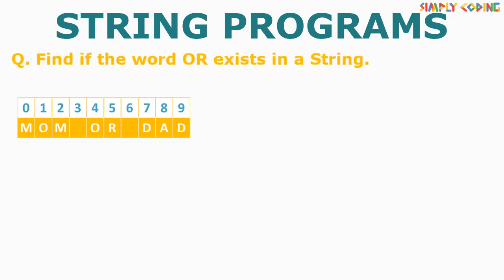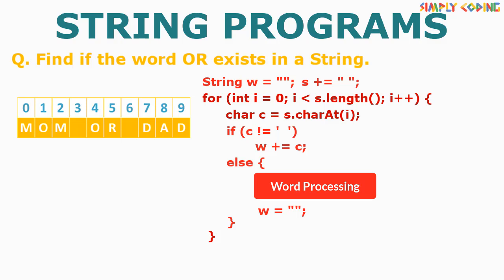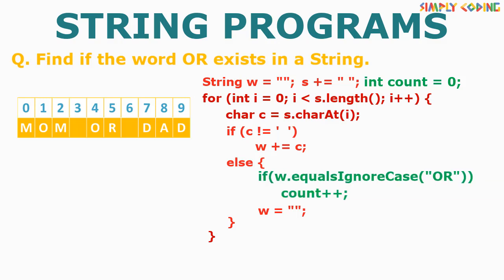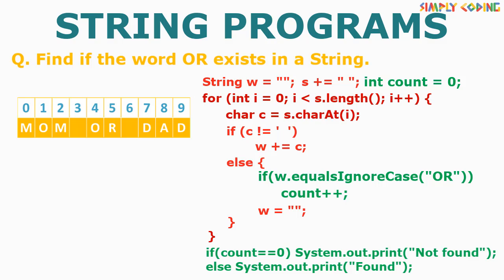The program could also be to find if a matching word exists — let's say we find the word 'or'. Or you could be asked to take the search word from the user as well. We will again take our template. We will first initialize a count variable to 0 outside the loop. We will write an if condition with equals or equalsIgnoreCase to check if the word matches. If yes, we will increment the count. Once outside the loop, we will check if count is 0, meaning the word is not found. Else the word is found. You can also print count to tell the frequency of the word in the sentence.